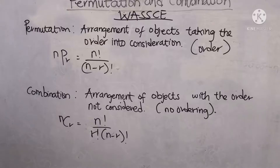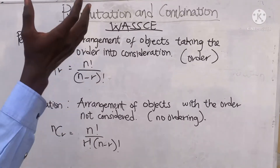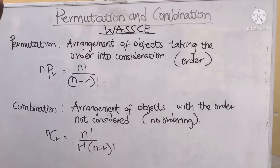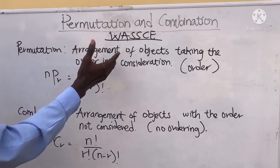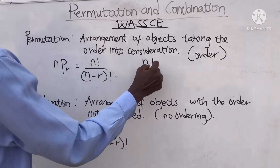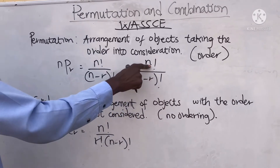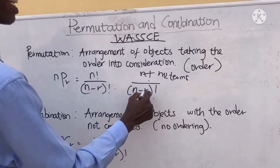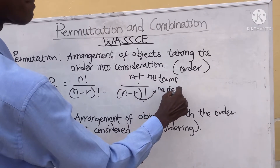Welcome to my top. Today we'll be treating permutation and combination, a very important topic in WAEC. It's a constant topic that always appears in WAEC exams. Permutation is the arrangement of objects taking the order into consideration. The formula is n factorial over n minus r factorial, where n is the number of terms and r is the number of items to be picked.